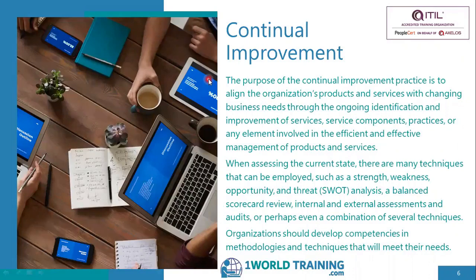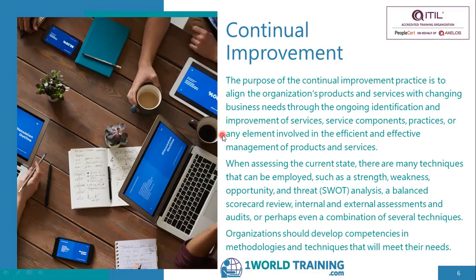The continual improvement practice is the first one under general management practices. We need to know the purpose of every practice for all 15 practices, and for those covered in-depth, not only the purpose but also additional guidance. The purpose of this practice is to align the organization's products and services with changing business needs — note those two key phrases: alignment and changing business needs. This happens through the ongoing identification and improvement of services, components, practices, or any element involved in the efficient and effective management of products and services.